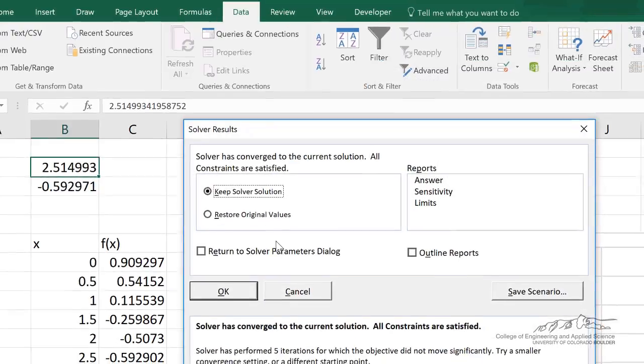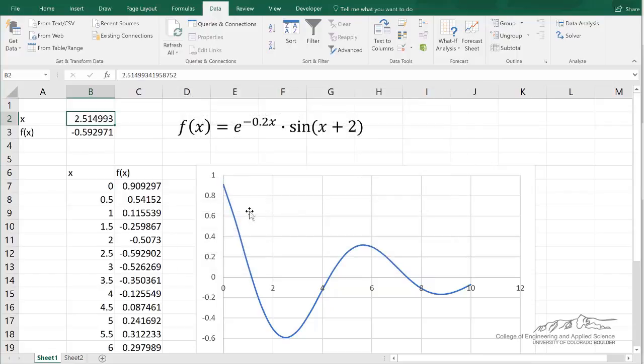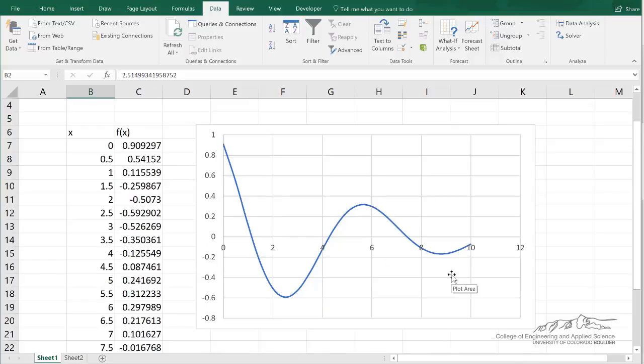And it turns through and finds that there's a minimum at about x equals 2.51, which is the y value of about negative 0.6. I want to show you how we can change the minimum that we find by changing the initial guess.